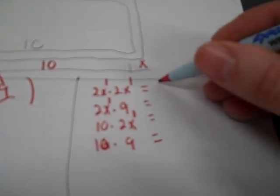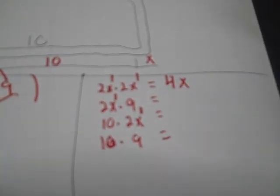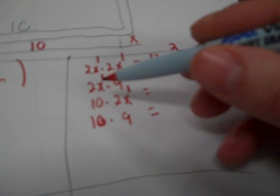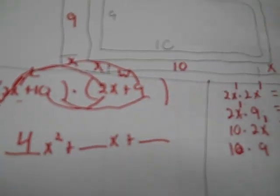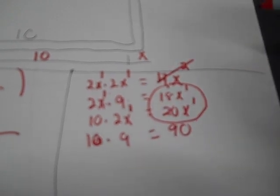Multiplying out: 2x times 2x — remember to add exponents — gives 4x². Then 2x times 9 is 18x. Then 10 times 2x is 20x. Then 10 times 9 is 90. Combining like terms: 4x² plus 38x plus 90.